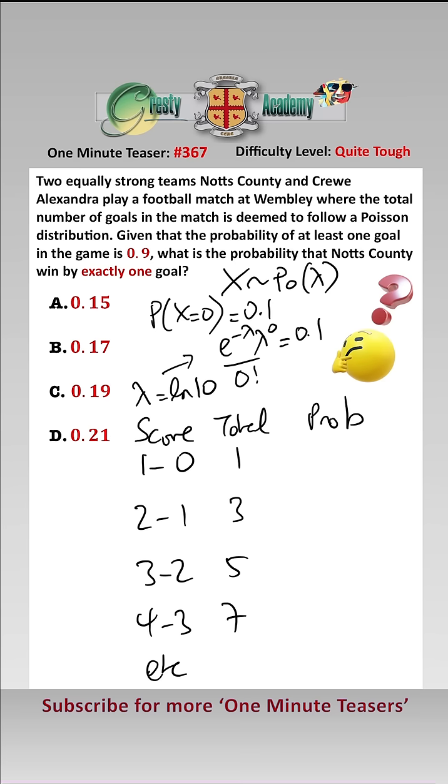The probability for 1 total goal is e to the minus lambda times lambda to the power of 1 over 1 factorial, times 1C1 over 2 to the power of 1, since either team could win 1-0. For 3 total goals, it's e to the minus lambda times lambda cubed over 3 factorial times 3C2 over 2 to the power of 3.